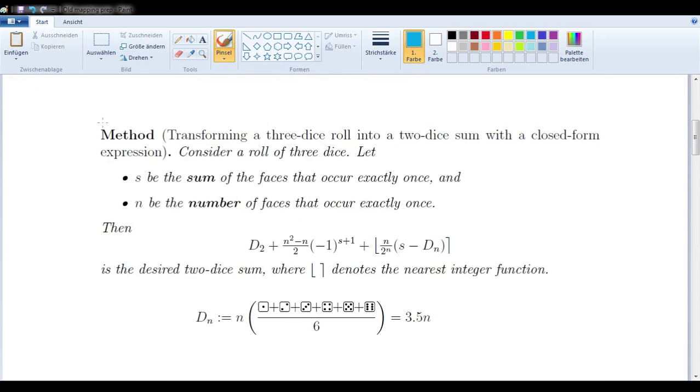So here it is. So if we consider a roll of three dice, and let s be the sum of the faces that occur exactly once, and n be the number of faces that occur exactly once, then this formula here, where part of it is just being rounded to the nearest integer, will give us just such an answer as we're looking for.